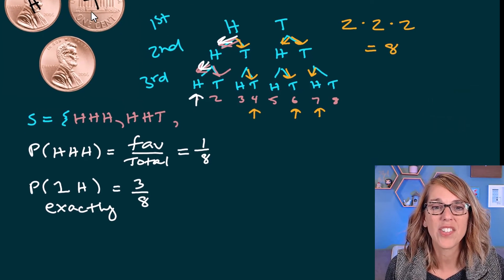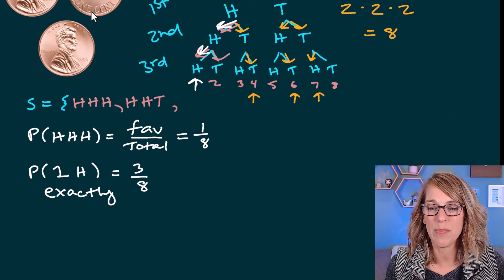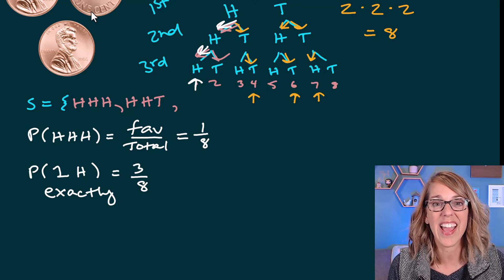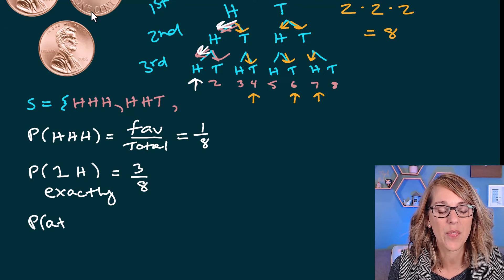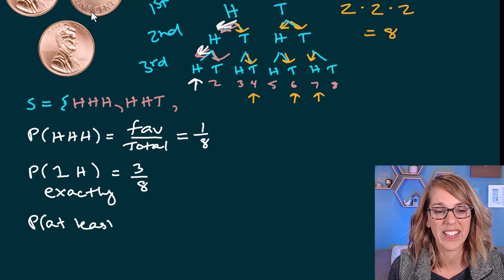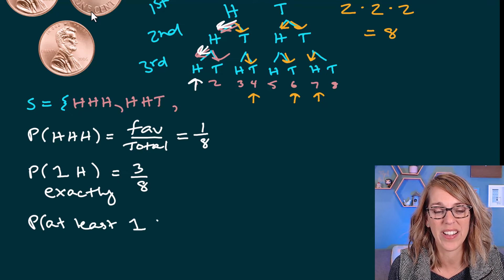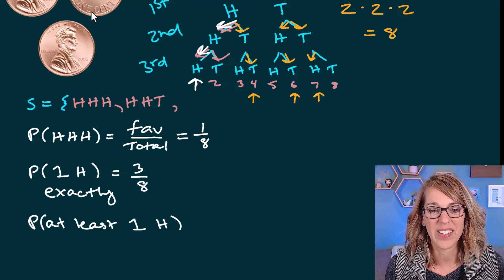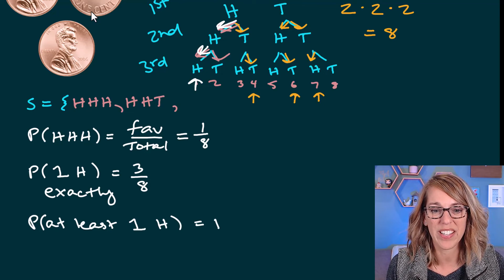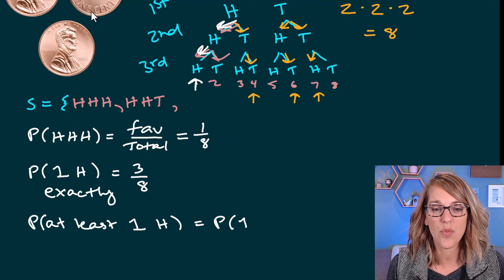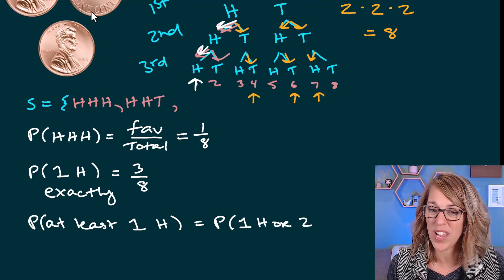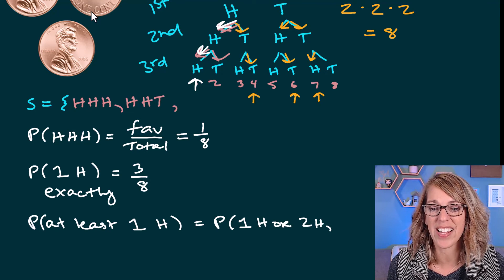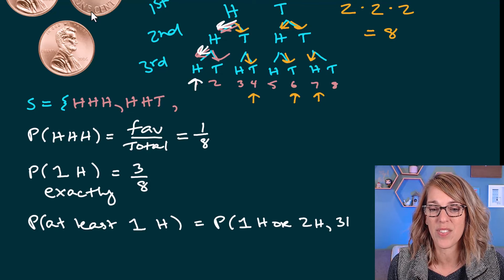What if I changed that one just a little bit? And instead I asked for the probability of at least one head. So at least one head. So this would be the probability of having at least one head, or I could have two heads, or I could have three heads.